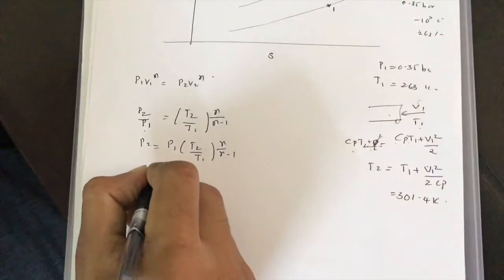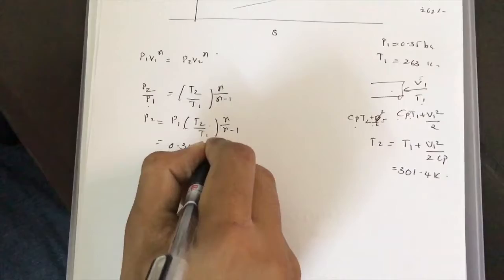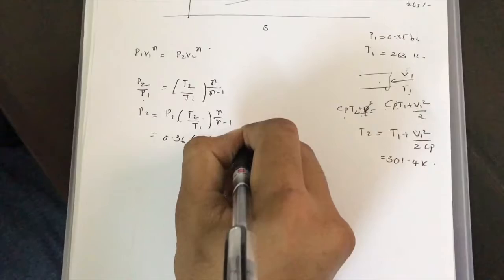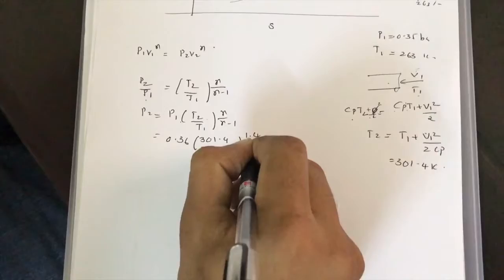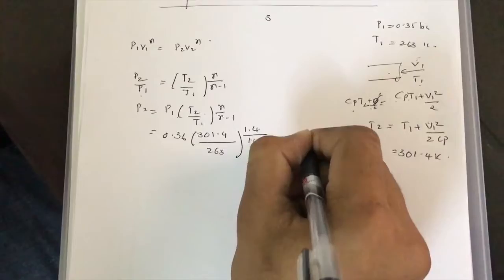P2 = P1 × (T2/T1)^(γ/(γ-1)). Here P1 = 0.35 bar, T2 = 301.4 K, T1 = 263 K, and γ = 1.4. So the exponent is 1.4/(1.4-1) = 3.5.